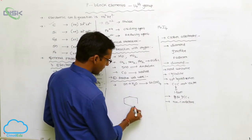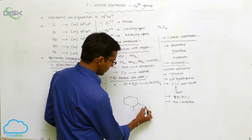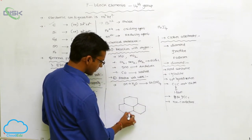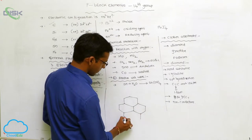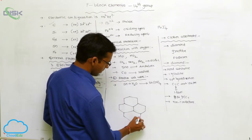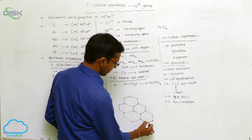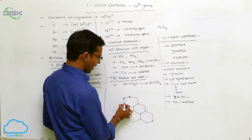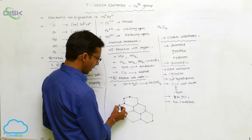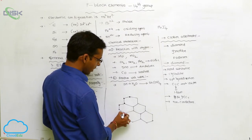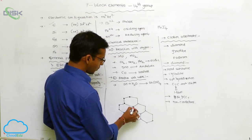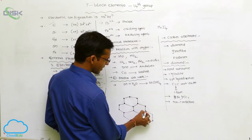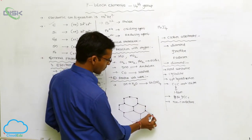The diamond particles are arranged in a specific manner. The arrangement of particles in a regular pattern is called crystalline allotropy. Diamond is a classic example of crystalline allotropy.